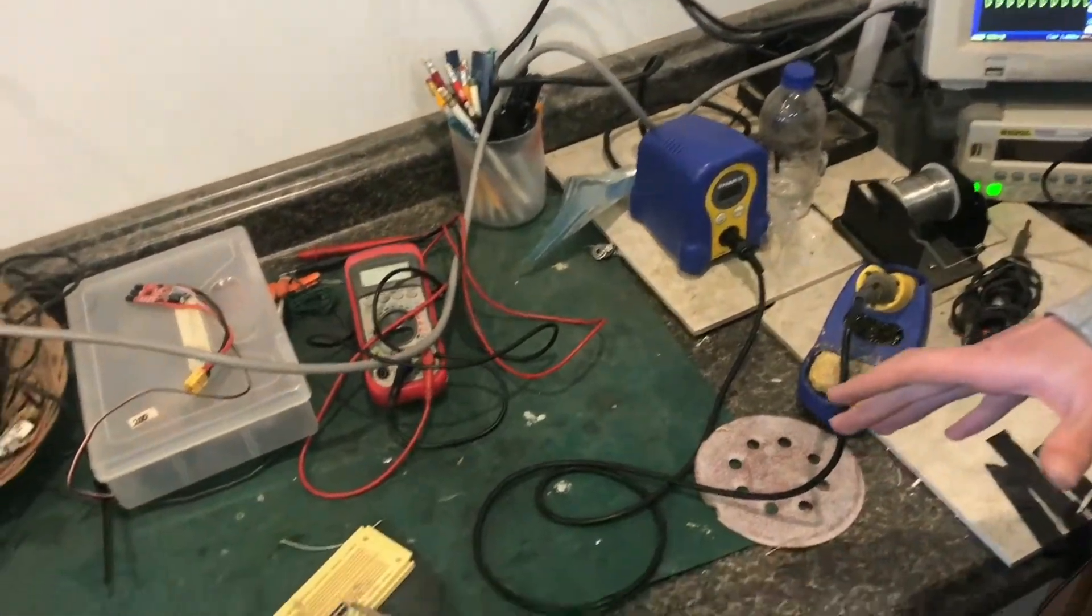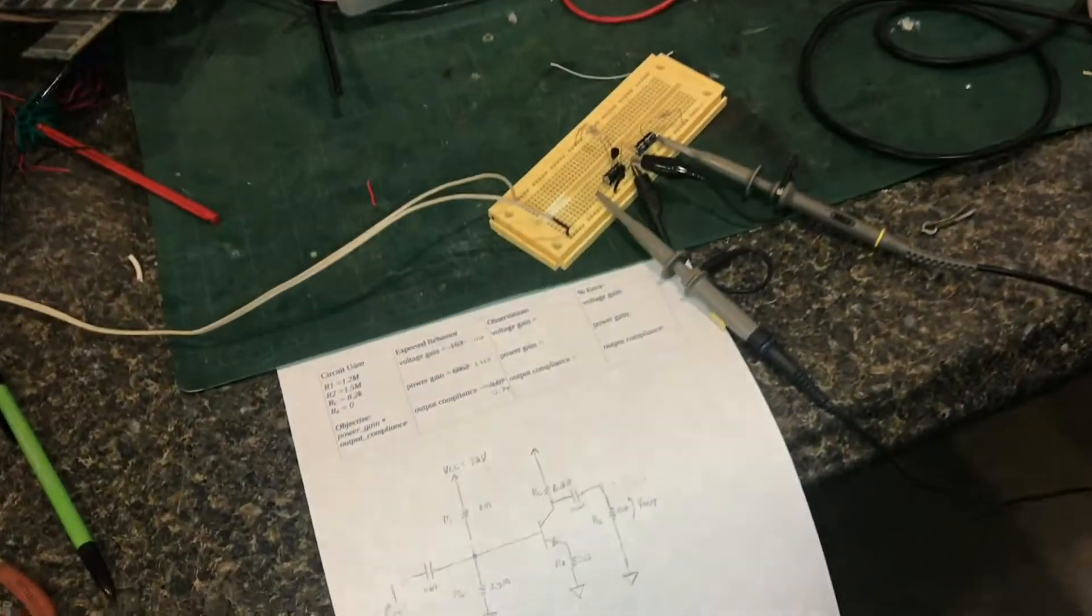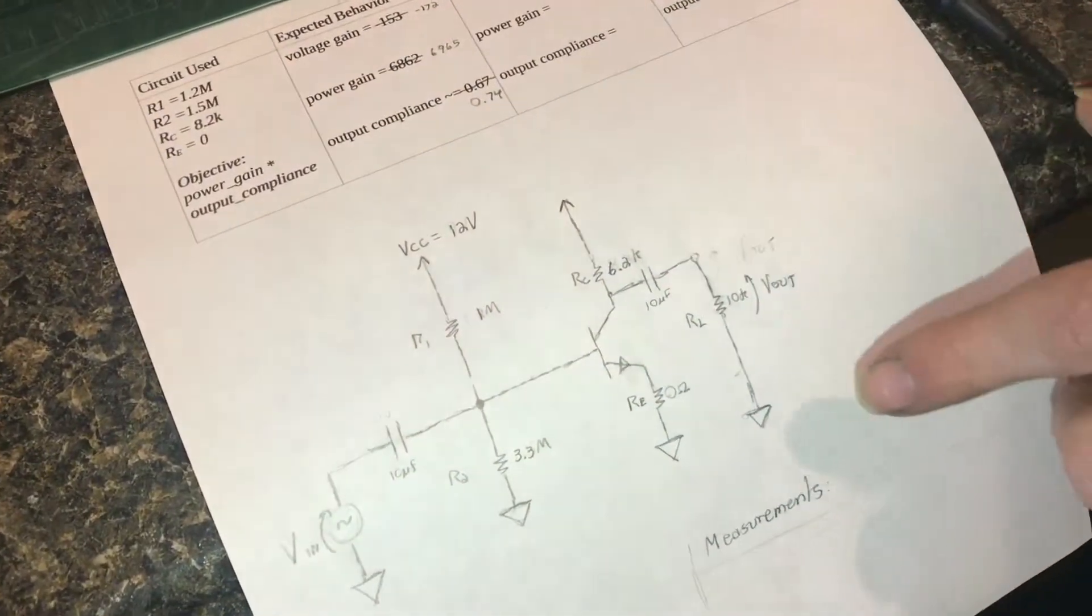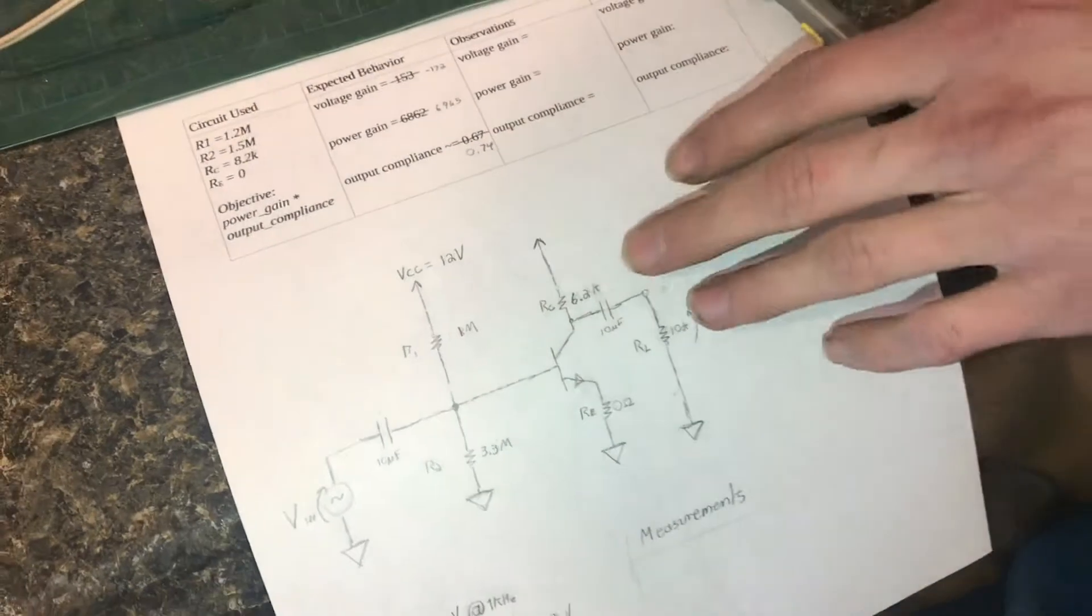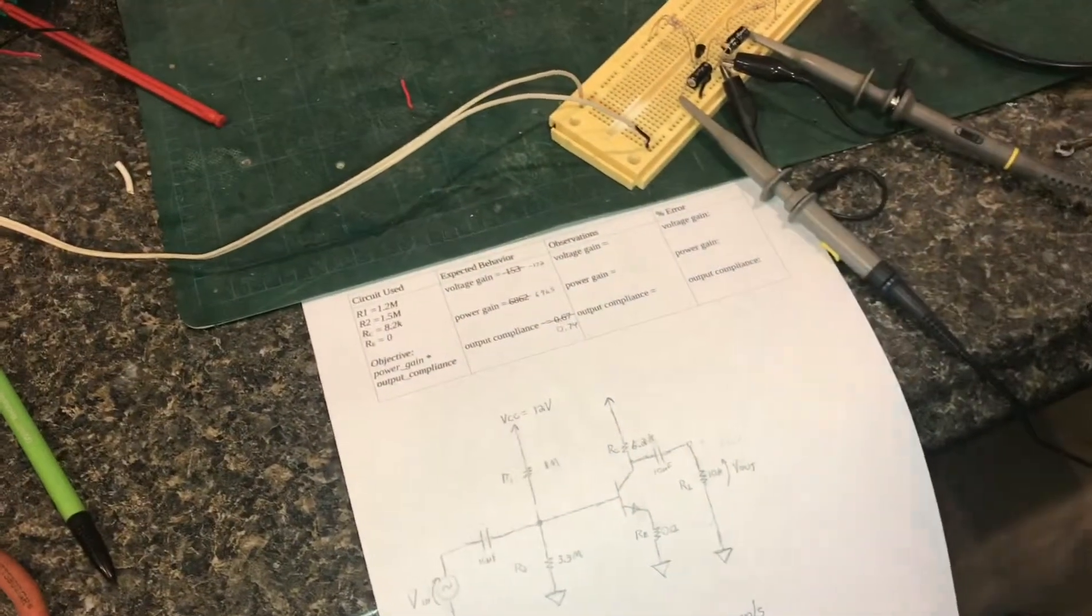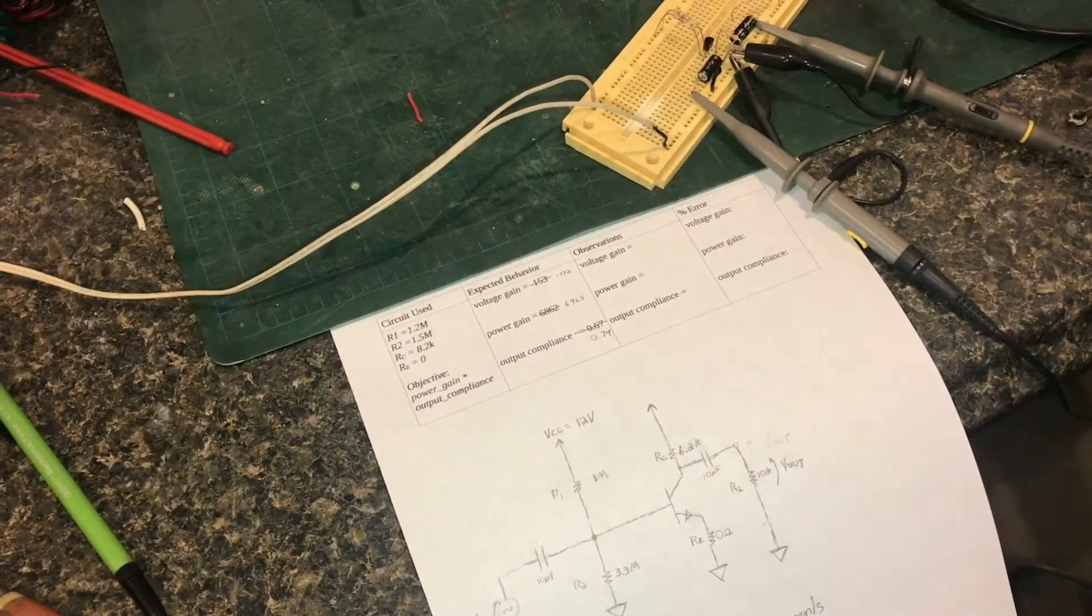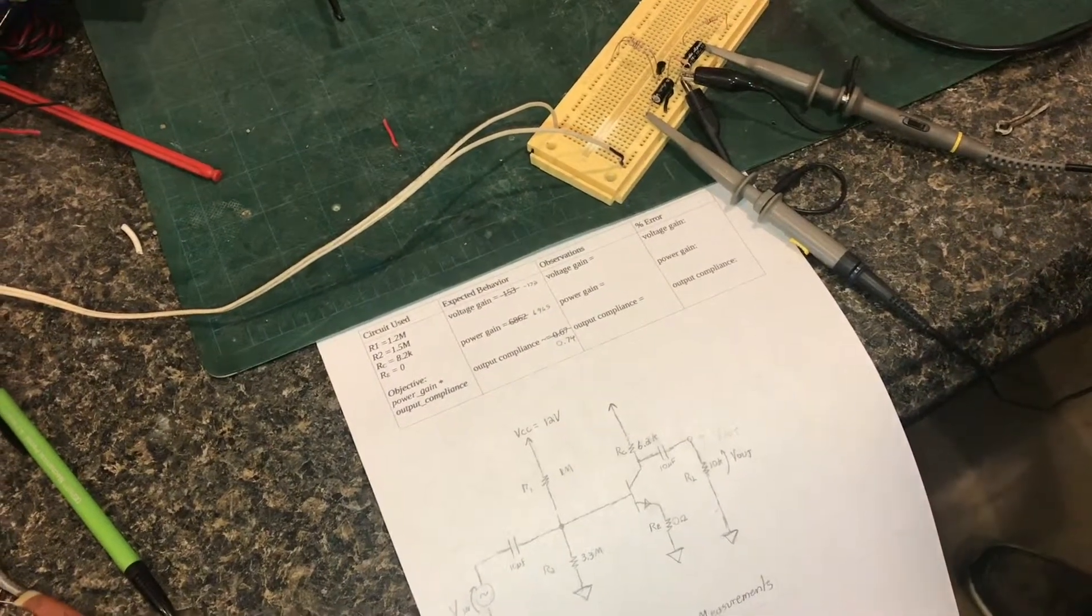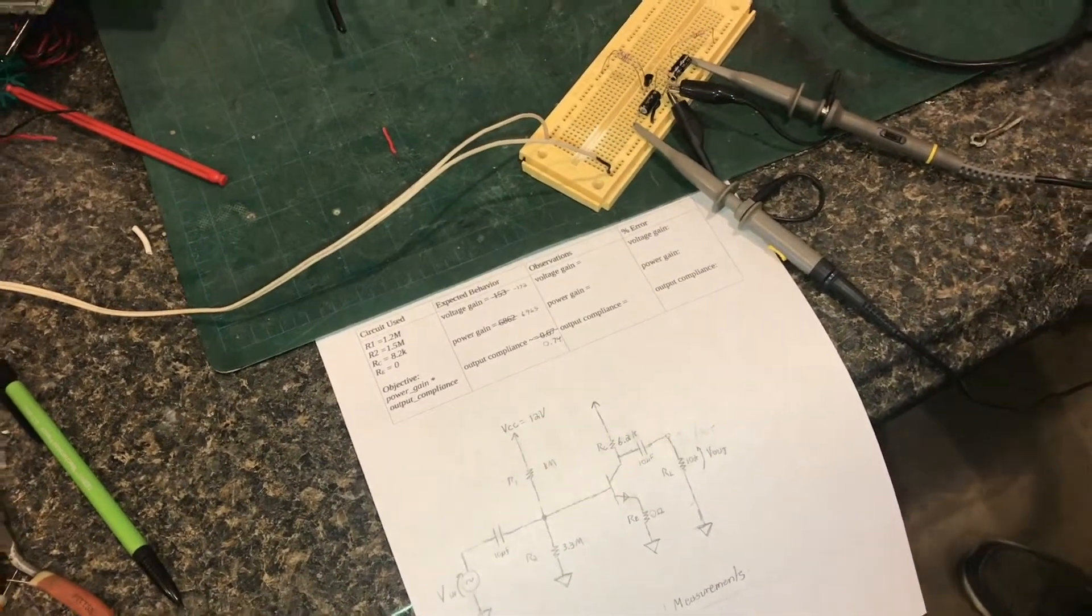I am testing a circuit that a computer algorithm generated. So this is a transistor amplifier, and in particular it's a voltage divider bias transistor amplifier. Now we learned how to do these in school many times, however what's different about this is